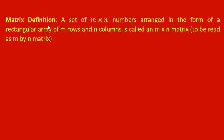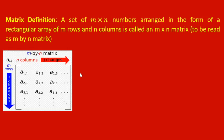Matrix. How we define this matrix? It is a set of m into n numbers arranged in the form of a rectangular array of m rows and n columns, and is called an m into n matrix. We read it as an m by n matrix. So total number of elements is m into n, and we arrange them in m rows and n columns.